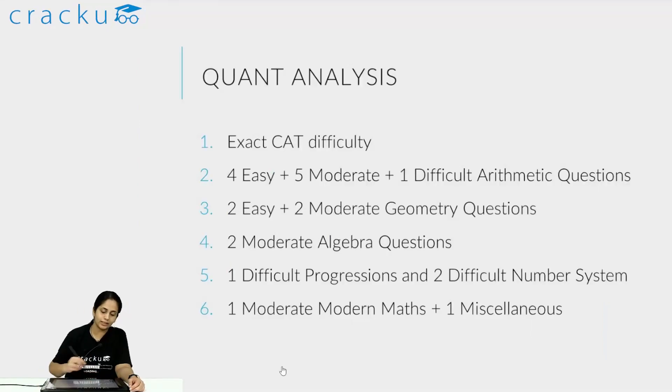Let us start with quant section. I felt that this was exactly CAT difficulty level in the sense that what you can reasonably expect in CAT, where the easier questions will come from, where the difficult questions will come from. It matched the same kind of layout - easy questions, some easy questions from arithmetic, some moderate difficulty questions from arithmetic, some easy from geometry, some moderate from geometry, moderate to difficult questions from algebra, moderate to difficult questions from number systems and other kind of things. I felt that this was exactly what I have seen over the years in CAT.